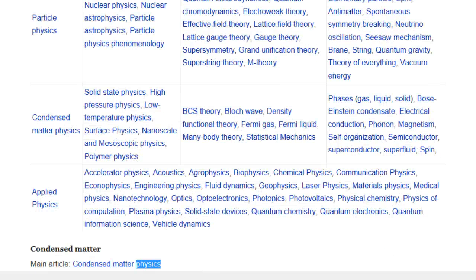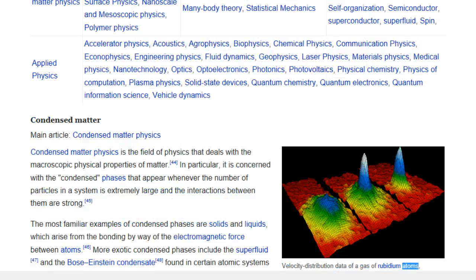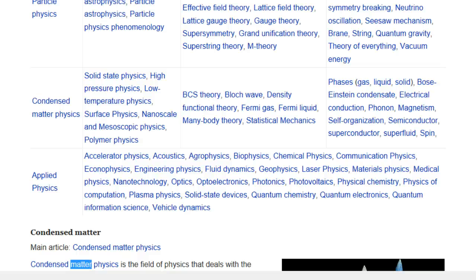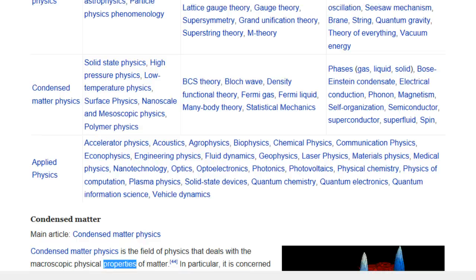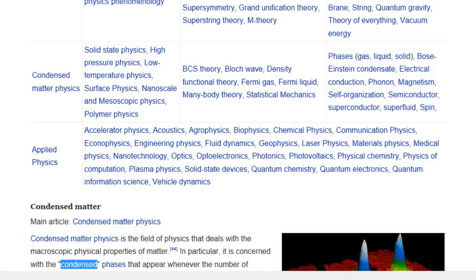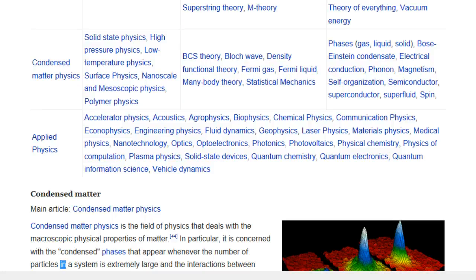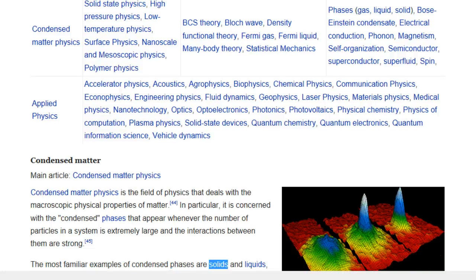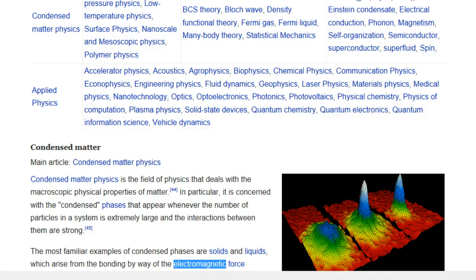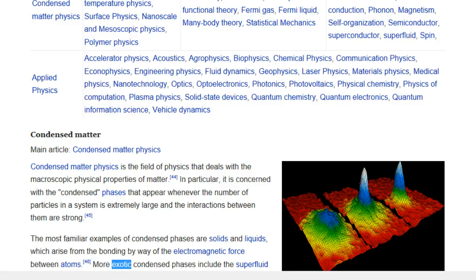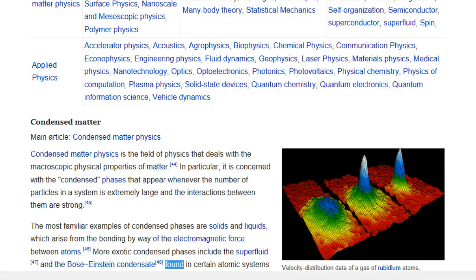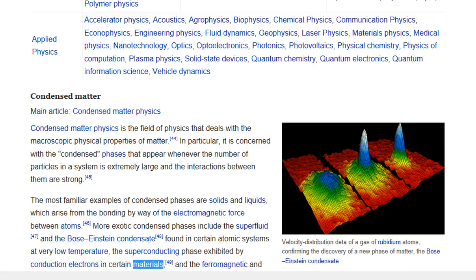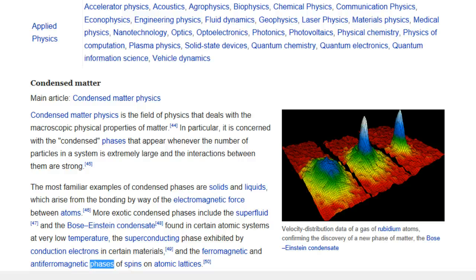Condensed Matter. Main Article, Condensed Matter Physics. Velocity distribution data of a gas of rubidium atoms, confirming the discovery of a new phase of matter, the Bose-Einstein Condensate. Condensed Matter Physics is the field of physics that deals with the macroscopic physical properties of matter. In particular, it is concerned with the condensed phases that appear whenever the number of particles in a system is extremely large and the interactions between them are strong. The most familiar examples of condensed phases are solids and liquids, which arise from the bonding by way of the electromagnetic force between atoms. More exotic condensed phases include the superfluid and the Bose-Einstein condensate found in certain atomic systems at very low temperature, the superconducting phase exhibited by conduction electrons in certain materials, and the ferromagnetic and anti-ferromagnetic phases of spins on atomic lattices.